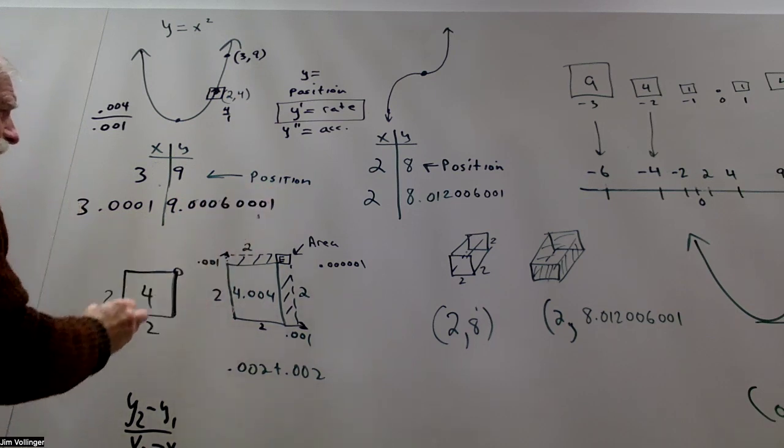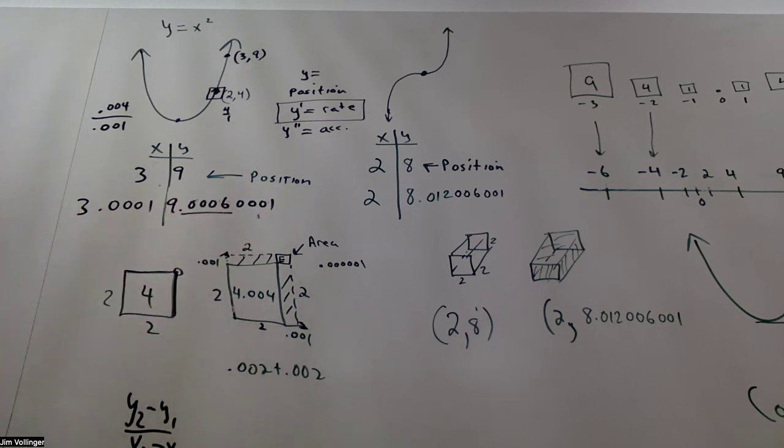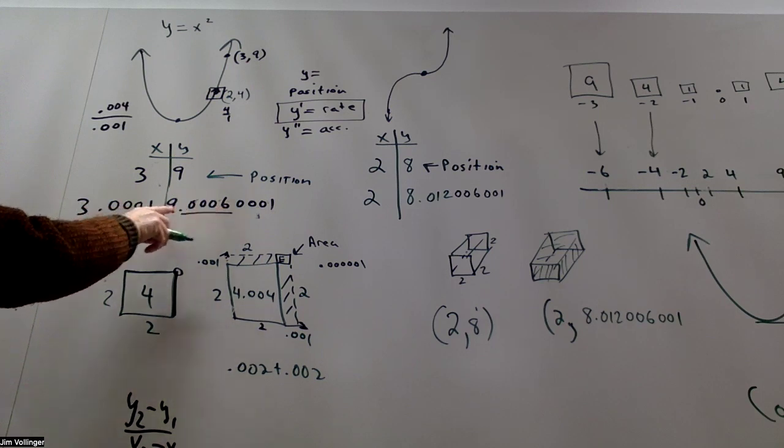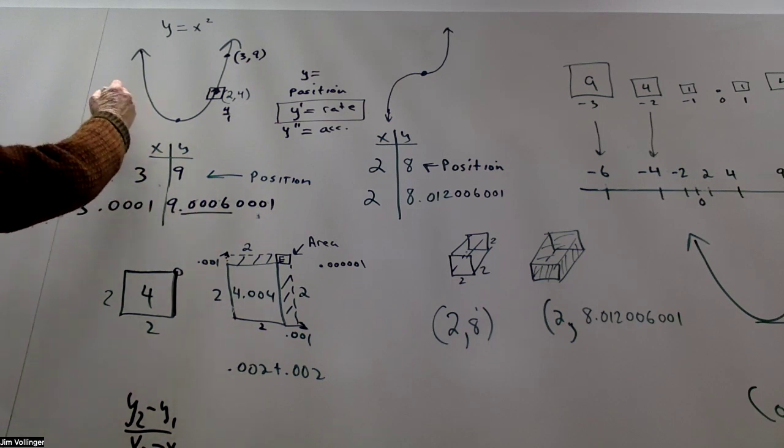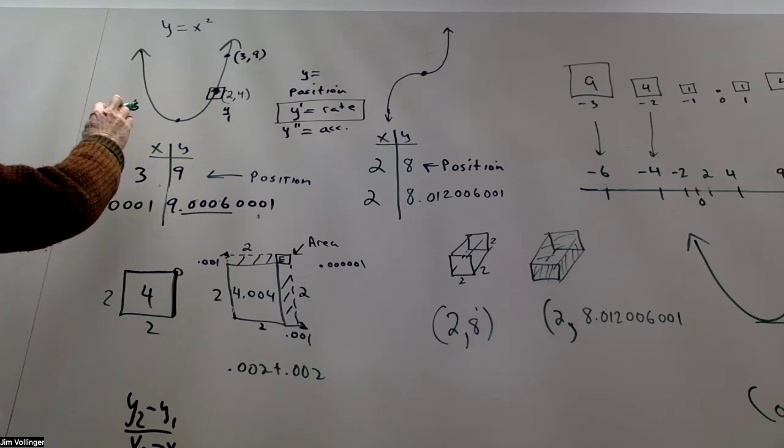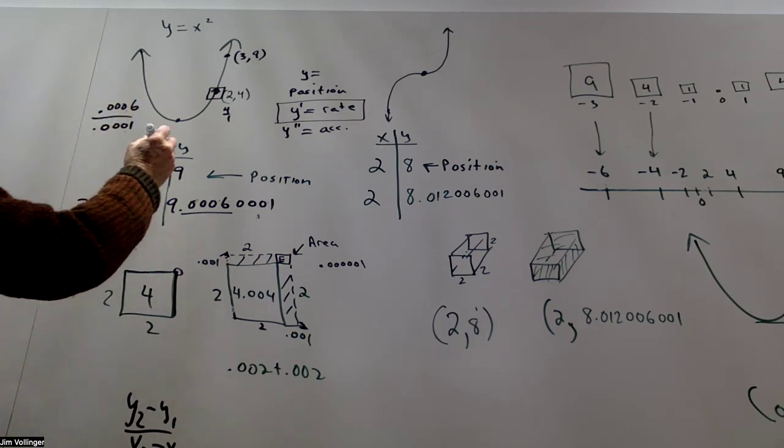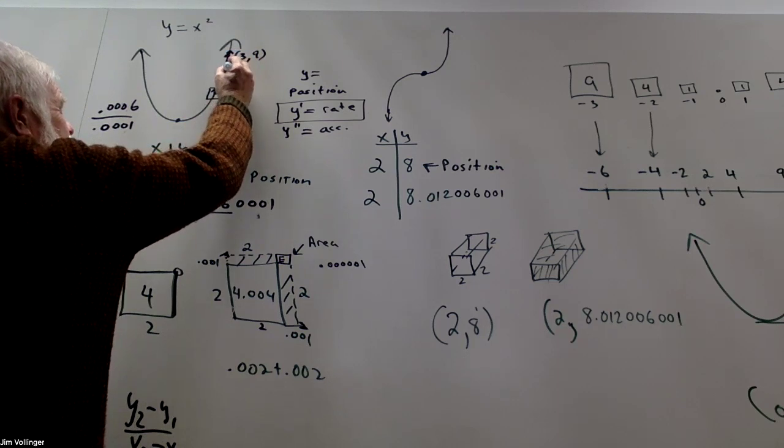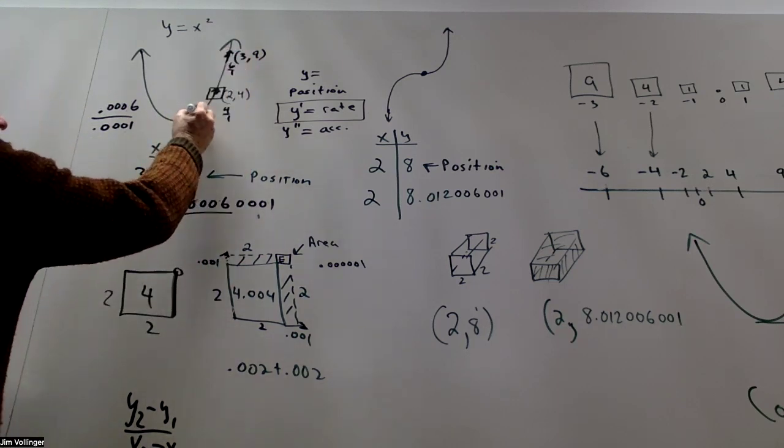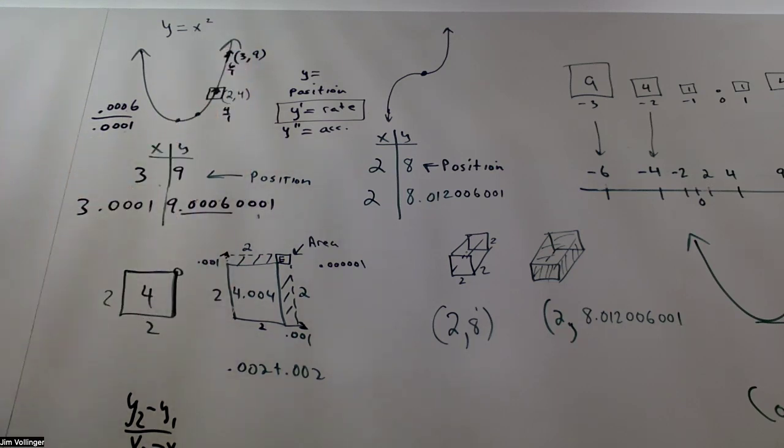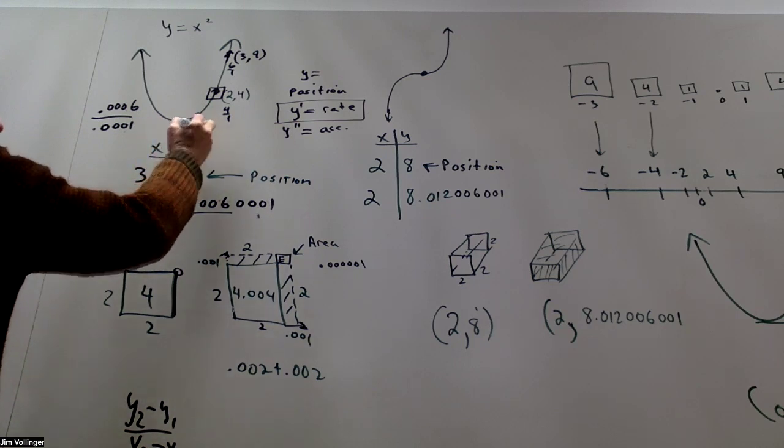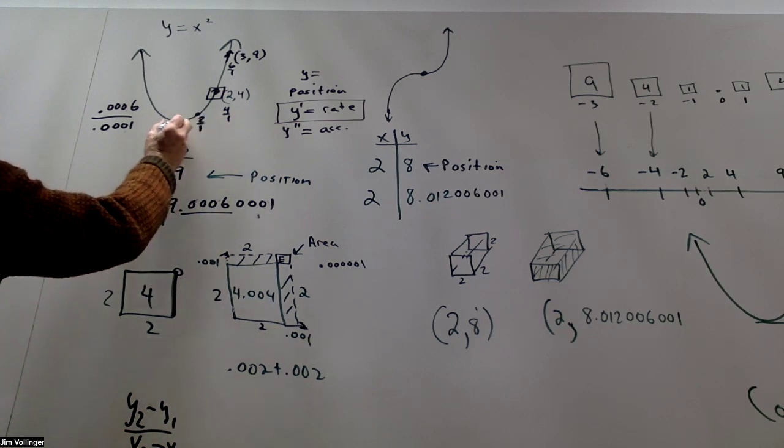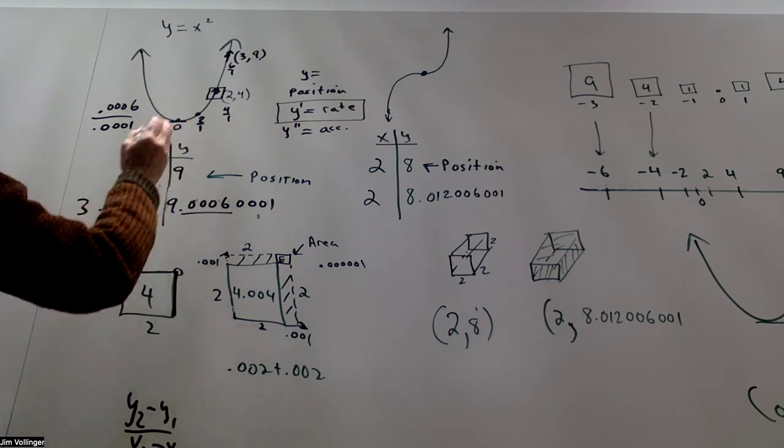That's going to get us 9.006001. And now I've got a little more accuracy. 0.006 divided by 0.001 is actually 6 to 1. So I'd be going up a little faster, 6 to 1. And it turns out if I did at 1, I'd be going up at 2 to 1. And at 0, you can see it's pretty flat there. I'm not changing at all.